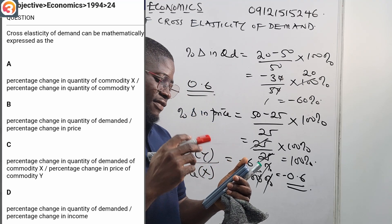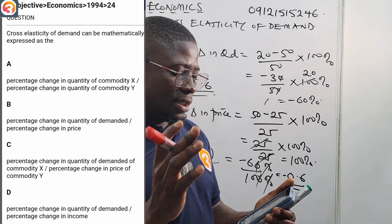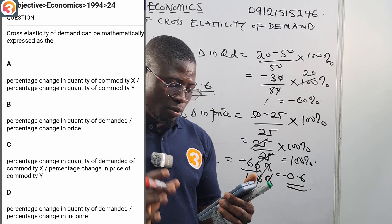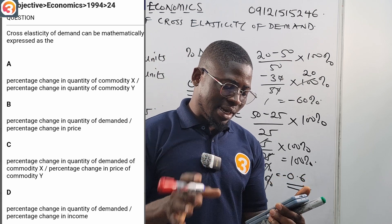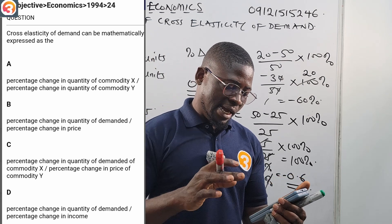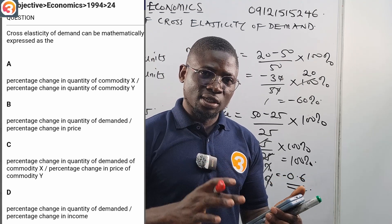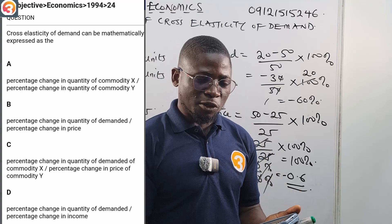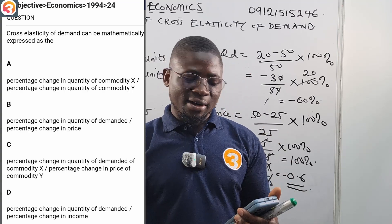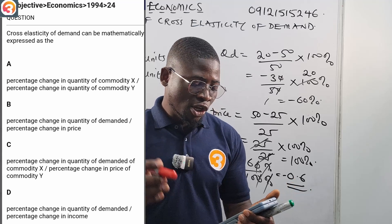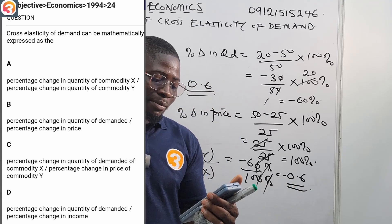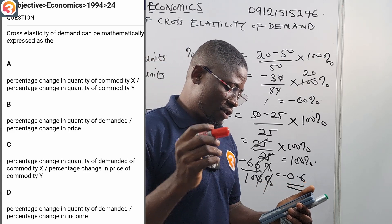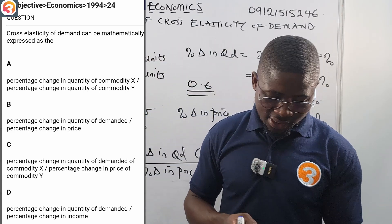Option A is wrong because it's quantity demanded divided by quantity demanded — not correct. Option B is wrong because it does not specify a commodity and a related commodity. Option C says percentage change in quantity demanded of commodity X over percentage change in price of commodity Y — that is the correct answer. Option C is correct.